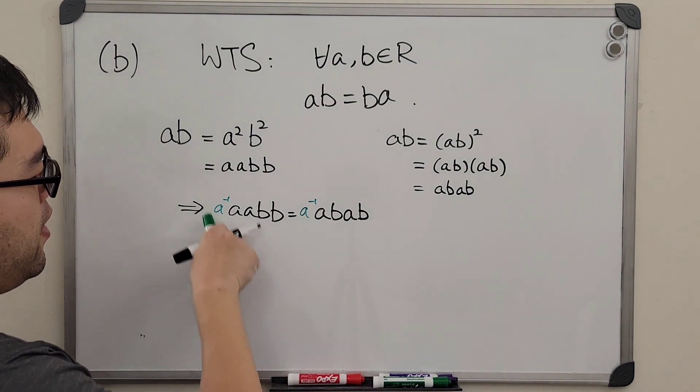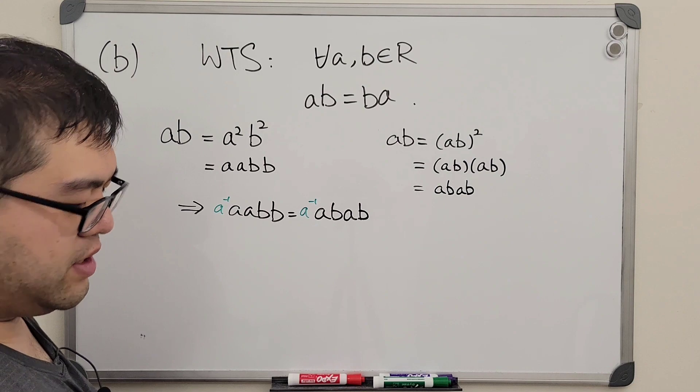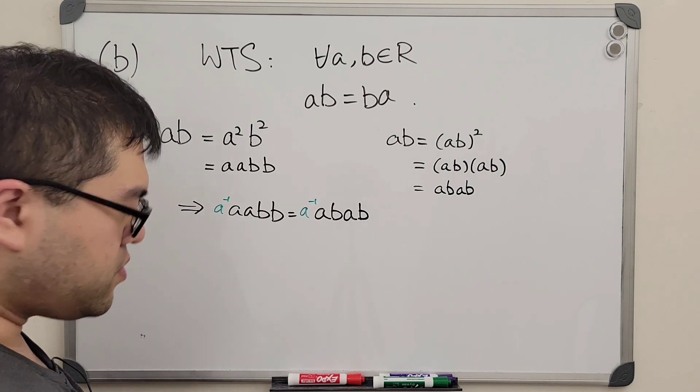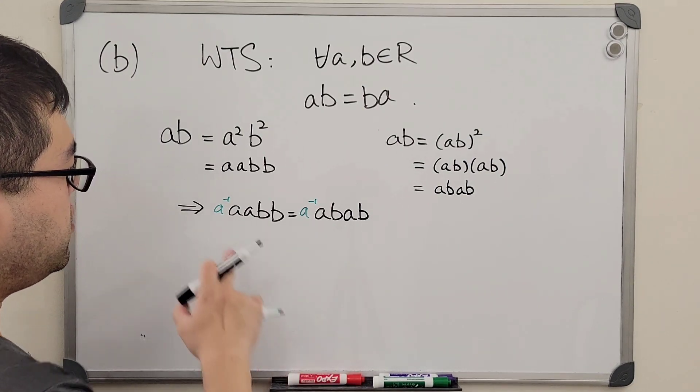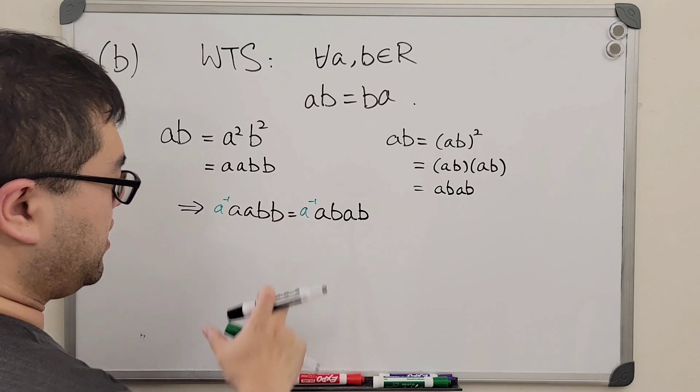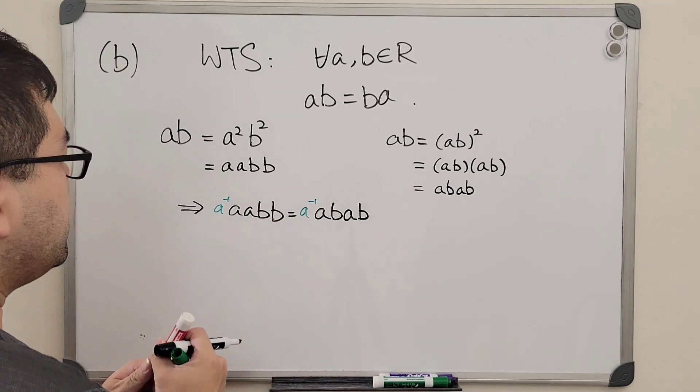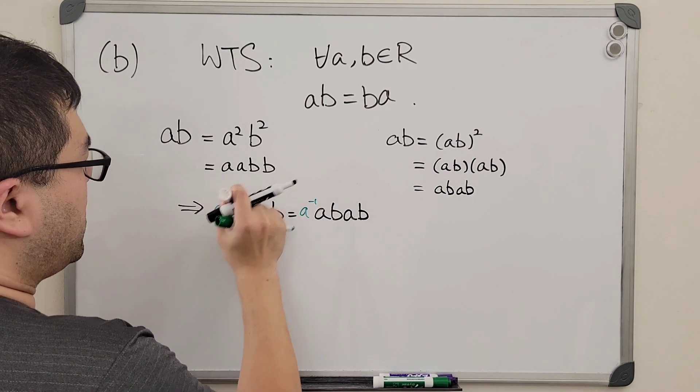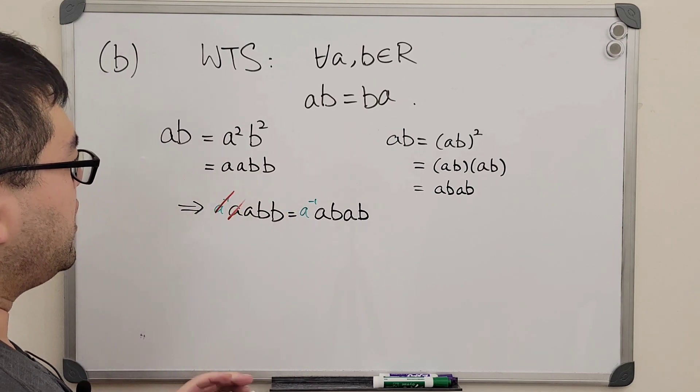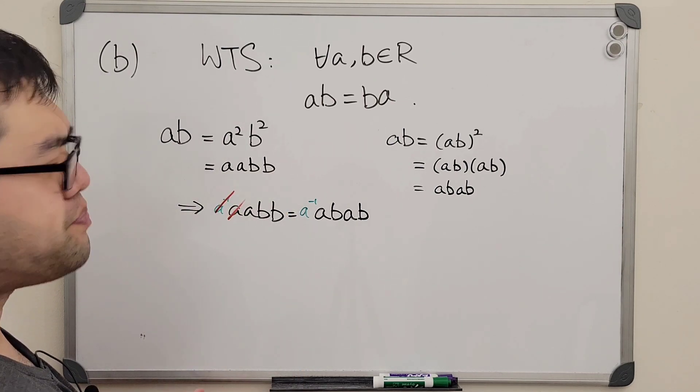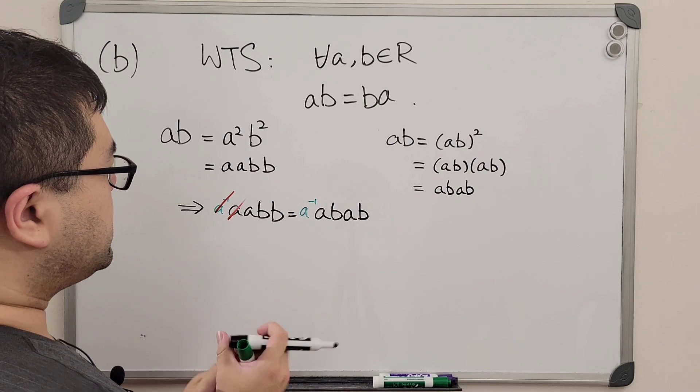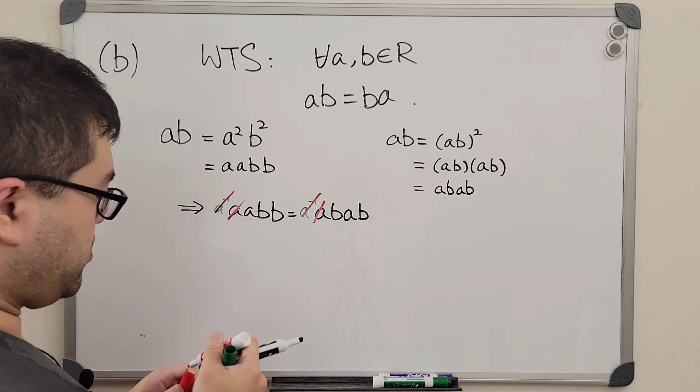So for this proof here, suppose that a and b are not equal to zero. Then it makes sense to say that the a inverse exists here. Then what are we going to do? We have a inverse on the left hand side and right hand side, so that we'll be able to cancel out both a, and similarly on the right hand side we'll be able to cancel out.